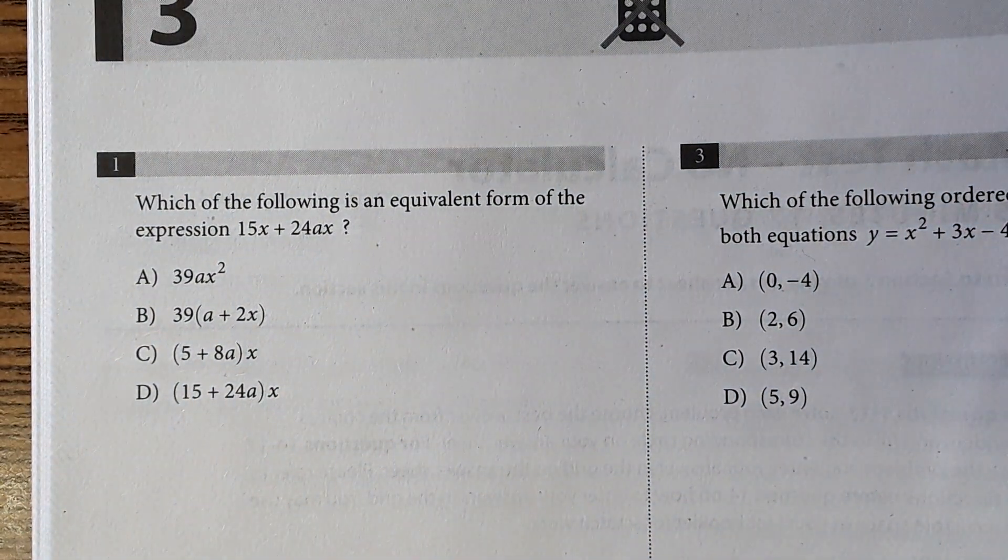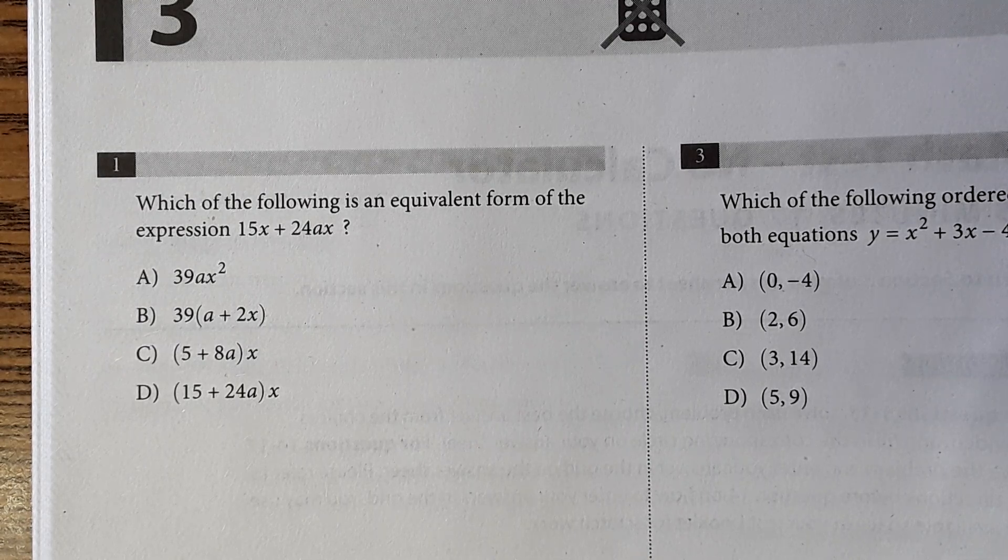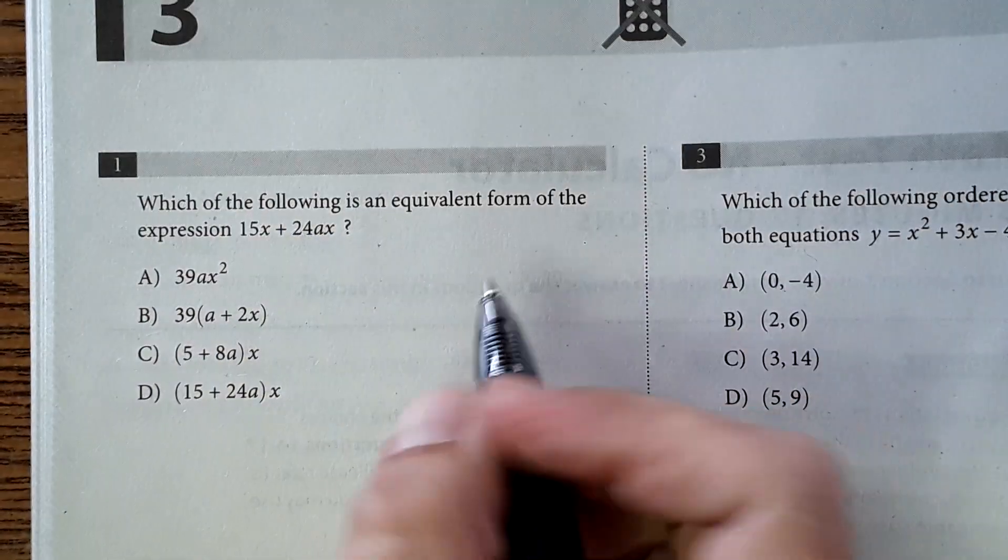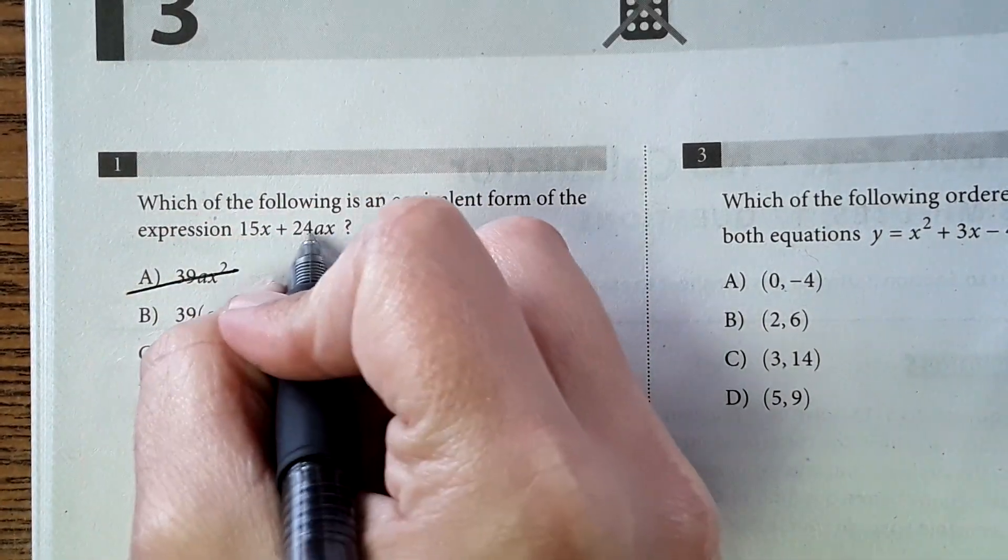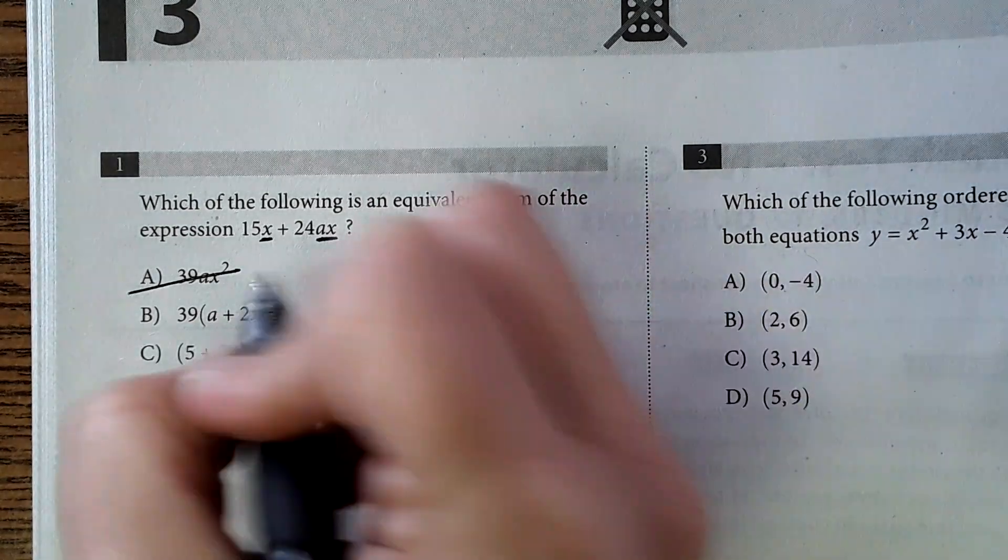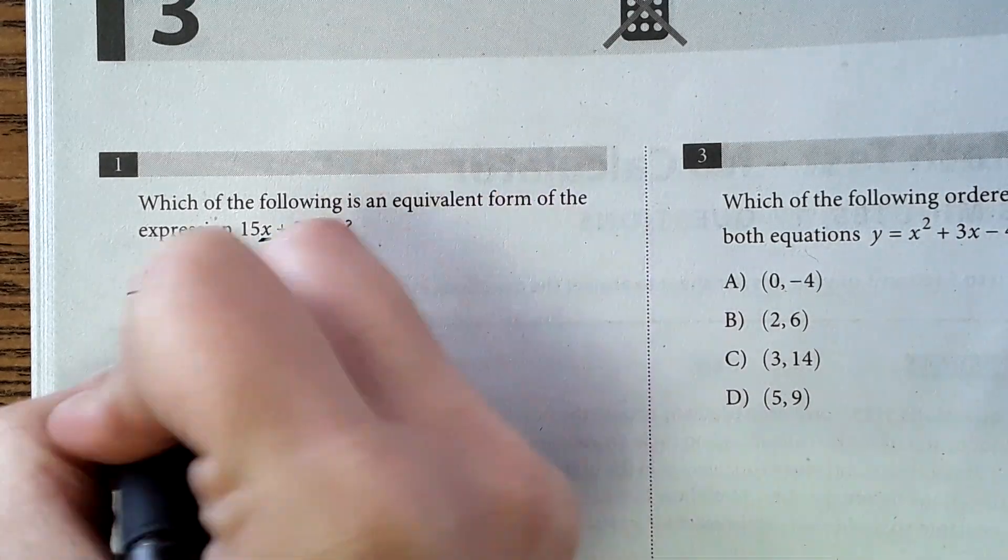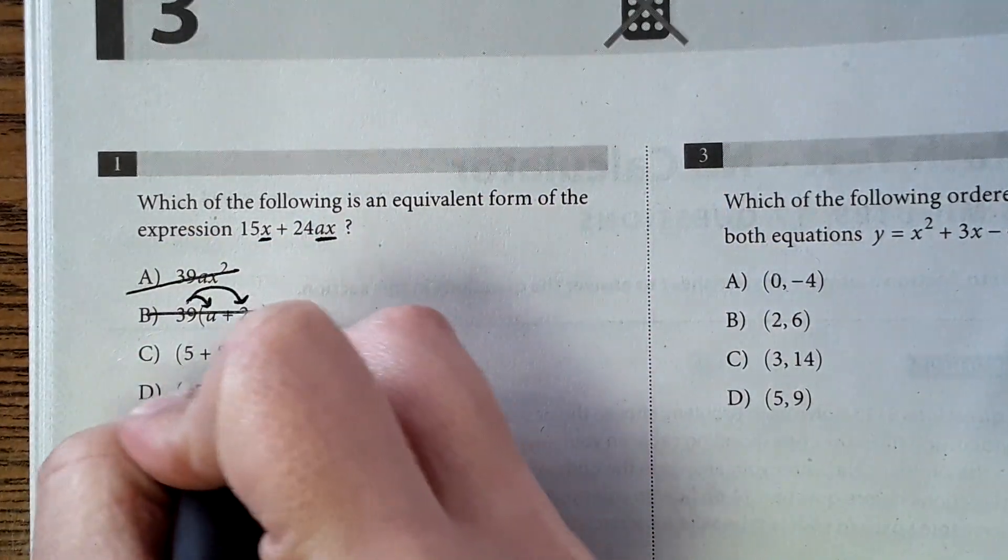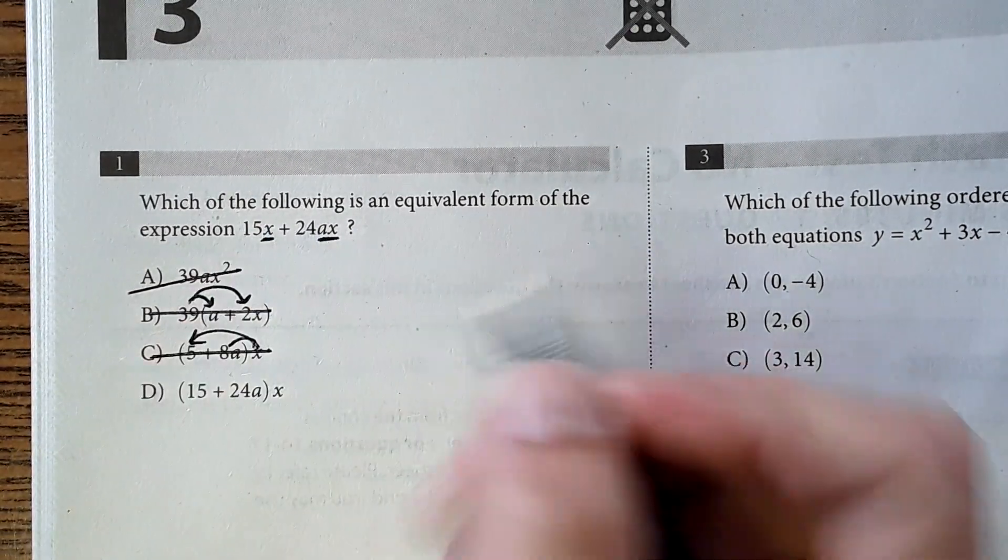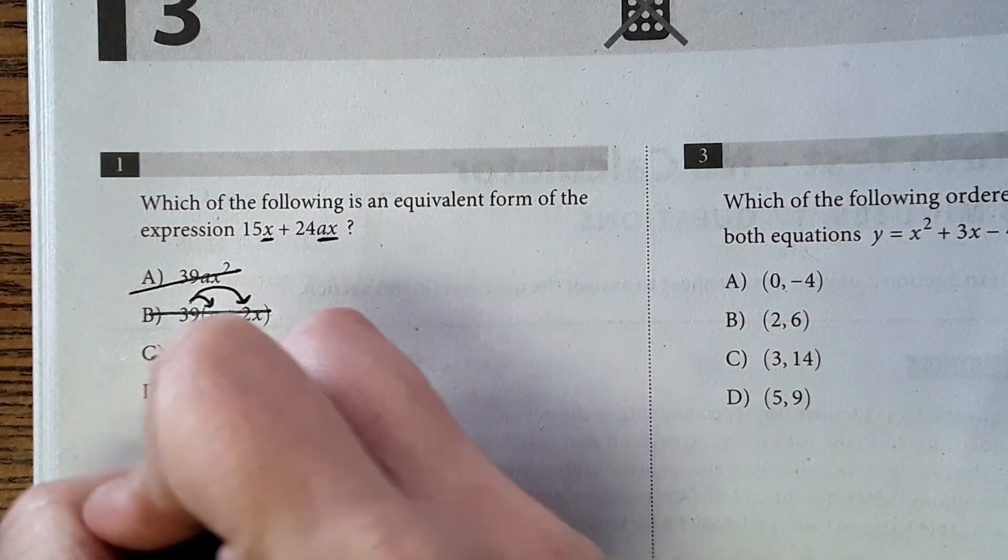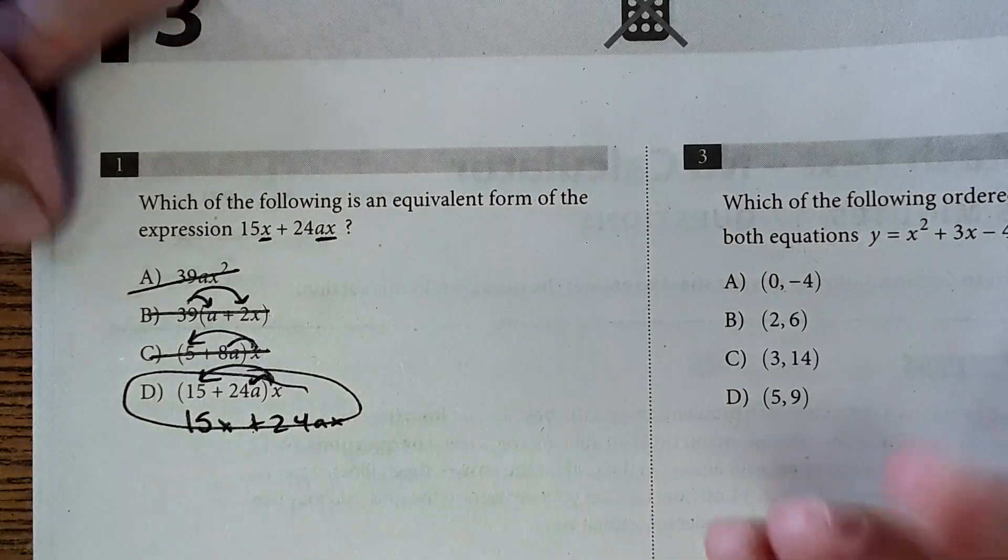Okay, so here is question one. It says which of the following is an equivalent form of the expression 15x plus 24ax? You're looking for something that simplifies to this right here. 39ax squared, that is not the answer. You can't add 15 plus 24 because your variables are a little bit different here. For the next one, if you were to distribute this, you'd get 39a, definitely not that. Here, if you distributed the x, 5x and 8xa, not the same as this one. But with this one, if you distribute that x, you do get 15x plus 24ax, which is the same as that. So this is the one that is equivalent.